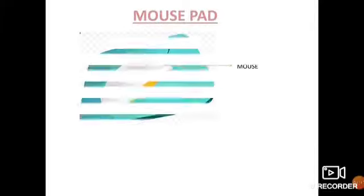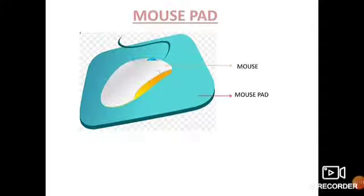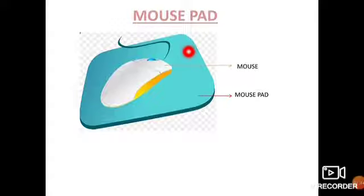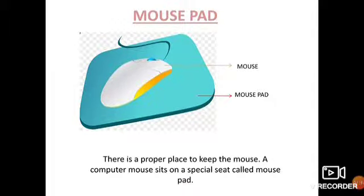Next, we have the mouse pad. The mouse pad is the place where we are going to place the mouse. There is a proper place where we have to keep the mouse, and it is called the mouse pad.